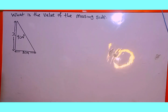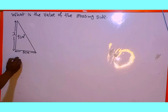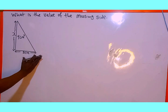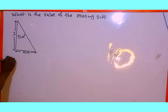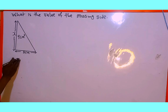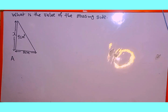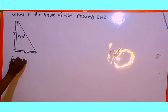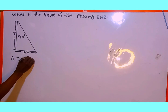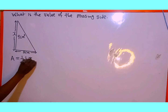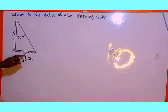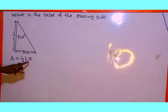The first thing we are going to recall is the formula to calculate the area of a triangle. The triangle area is noted as capital A, which is equal to one over two multiplied by b multiplied by x, where b is the baseline, A is the area, and x is the missing side.